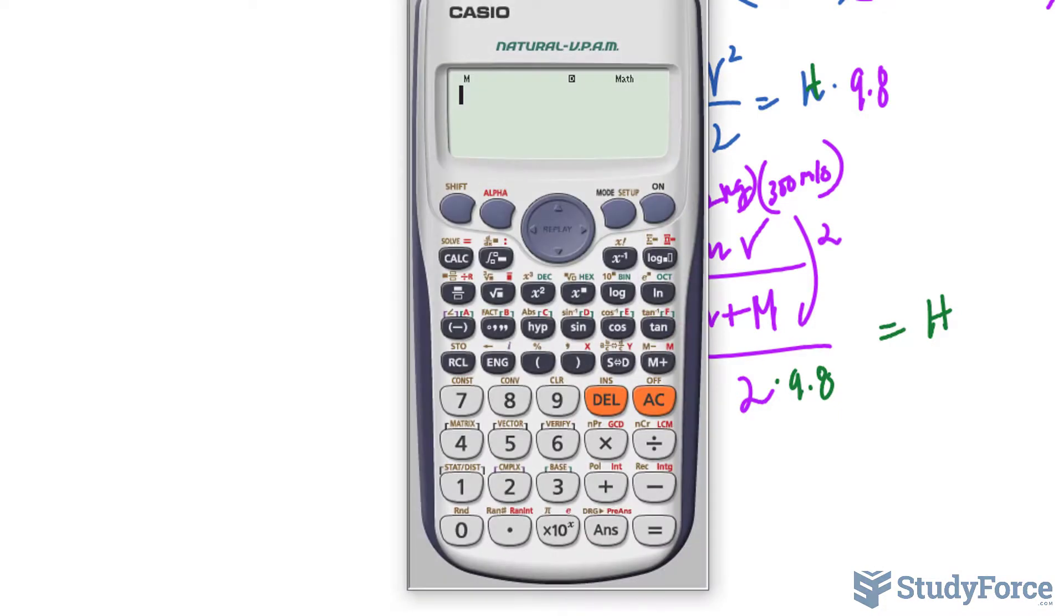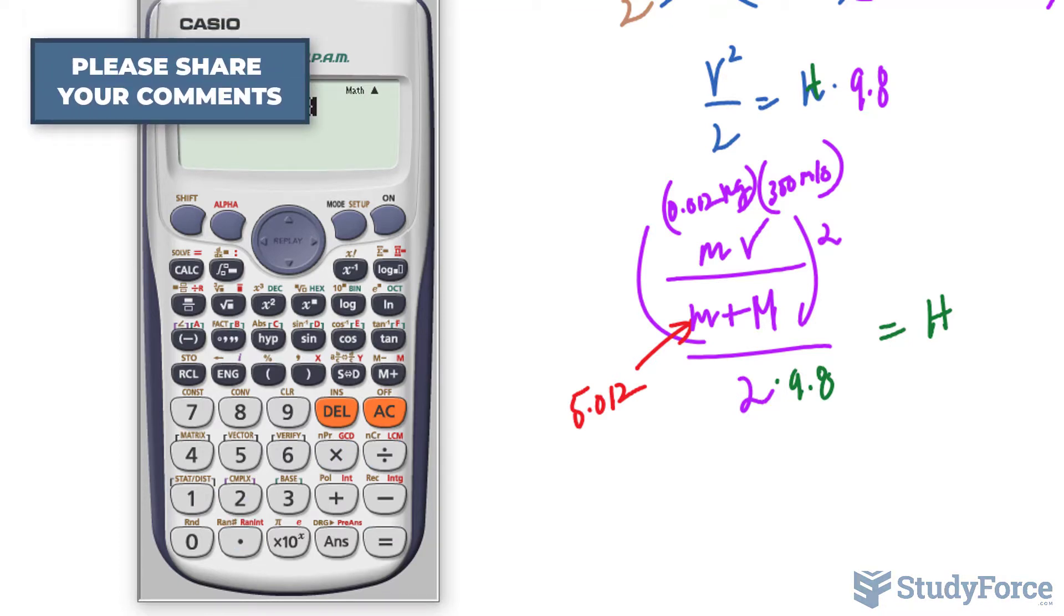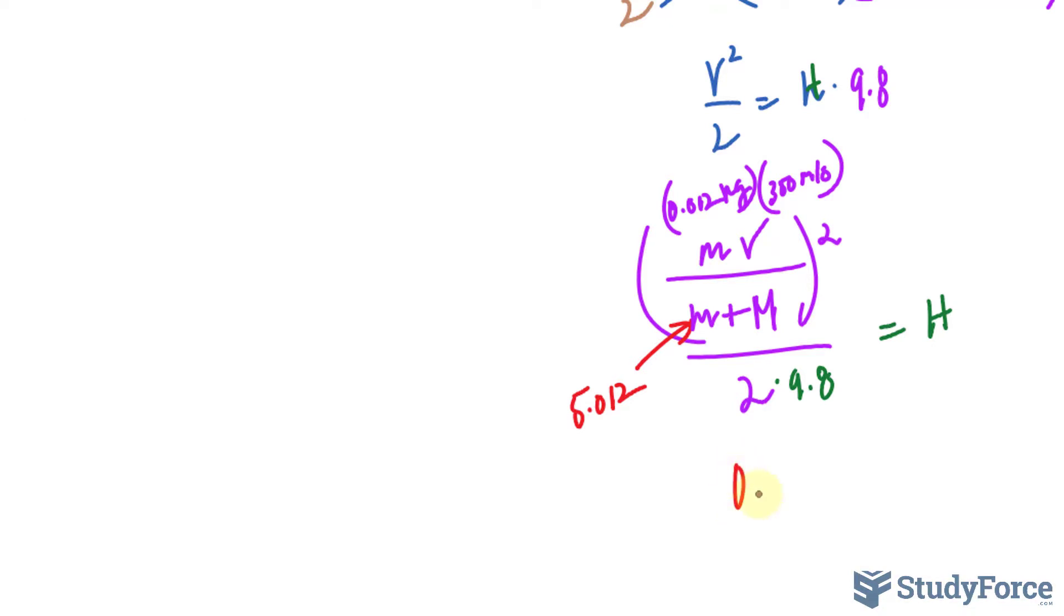Using our calculator, at the top, I have 0.012 times 350 divided by 5.012. Raise that to the power of 2, and then that gets divided by 2 times 9.8, which gives us a height of 0.0358 meters.